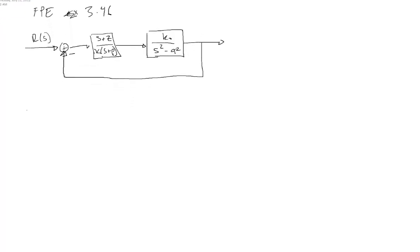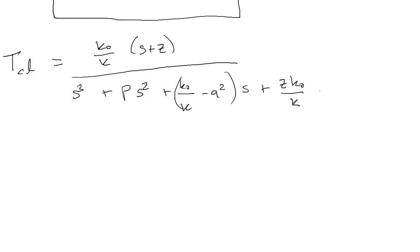So if I find the closed-loop transfer function, I end up with the following. I get K-naught over K times S plus Z, and then that's all over S to the third plus P times S squared plus K-naught over K minus A squared, all of that times S plus Z times K-naught over K minus A squared times P.